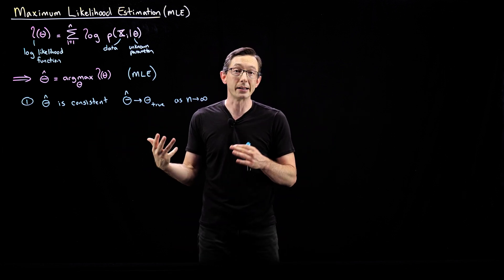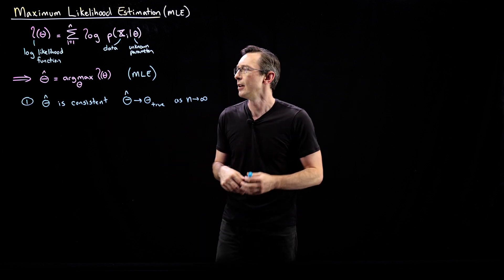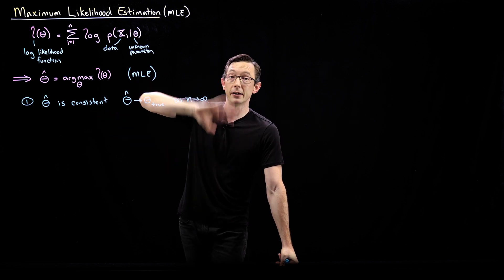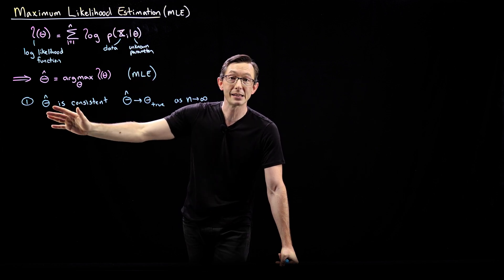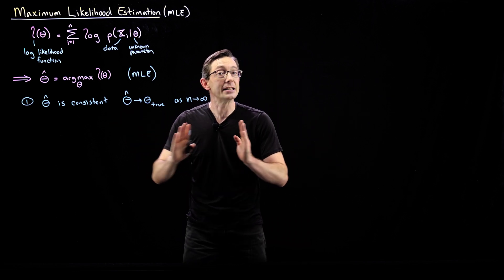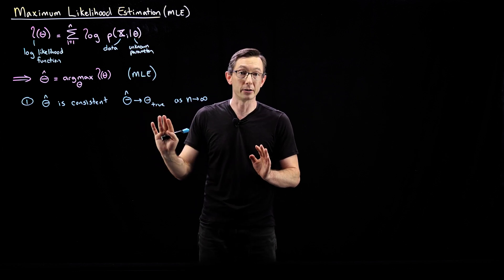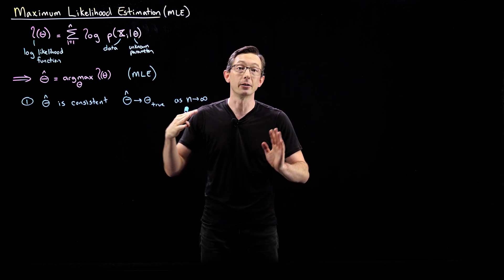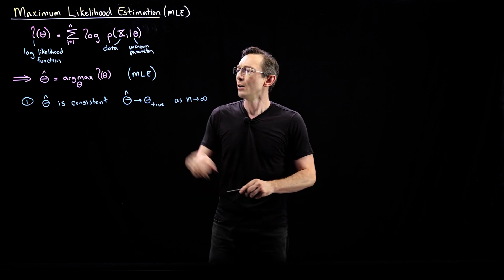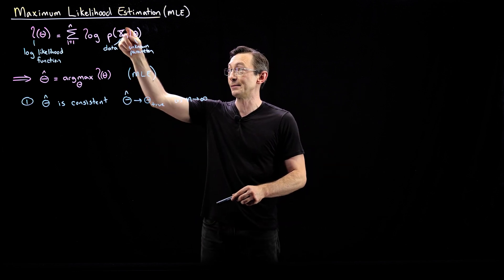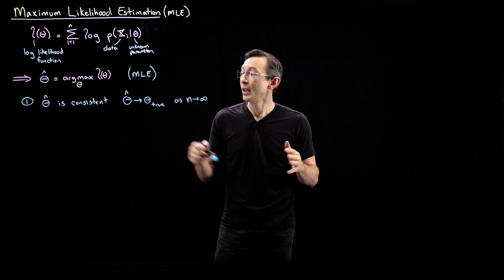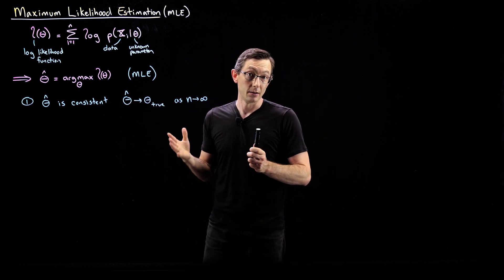Consistency also means that our estimate is unbiased. The method of moments theta hat is also a consistent estimate of theta. So method of moments and maximum likelihood estimation both give consistent unbiased estimates of the true parameter values in the large n limit. But they might converge at different rates — some methods will have more or less variance as a function of n. Remember, theta hat is itself a random variable because it's a function of the random variables in our data. So theta hat has a mean and a variance, and consistency means its mean value is the true value of the parameter.